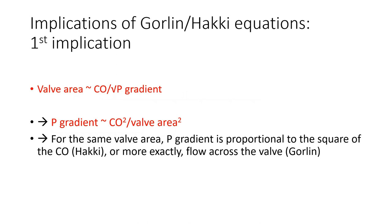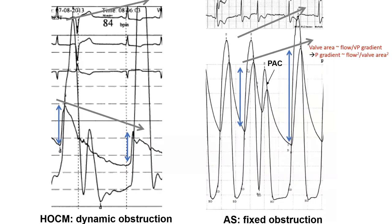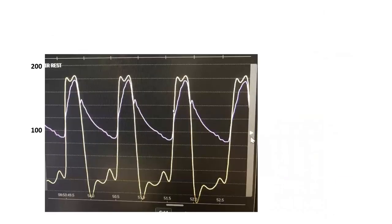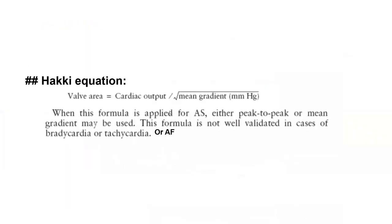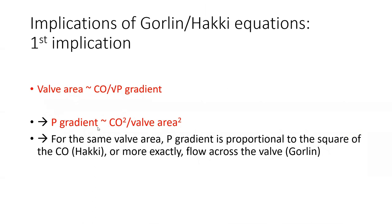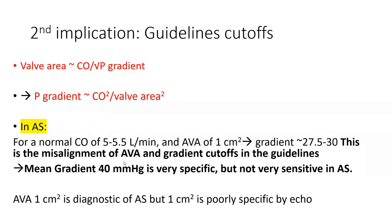There are important physiologic implications of the Gorlin and Hakkey equations. Flipping the equation gives: pressure gradient = cardiac output² / valve area². This tells you that pressure gradient — and hemodynamic severity of valve stenosis — is very dependent on cardiac output. Doubling cardiac output can quadruple the pressure gradient, whether in mitral stenosis or aortic stenosis. This explains why even in aortic stenosis, after a PVC with an increase in flow, you get an increase in gradient. It also explains why low cardiac output can produce a low gradient despite a valve area less than 1 cm² in severe AS.